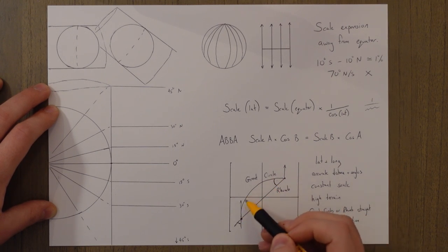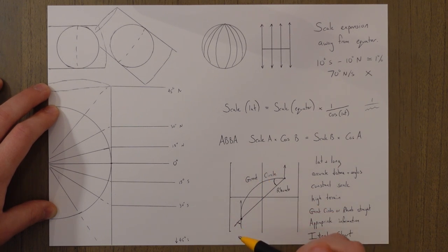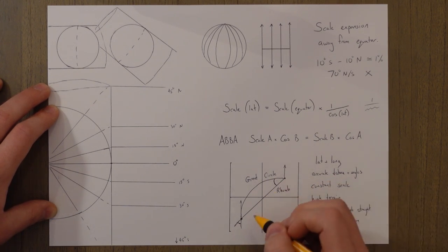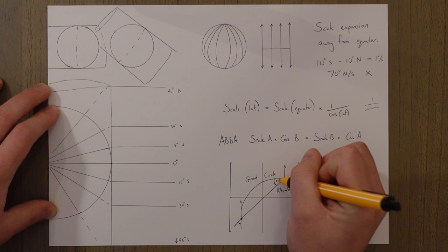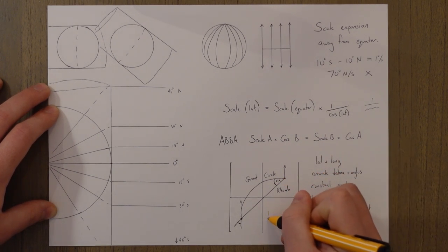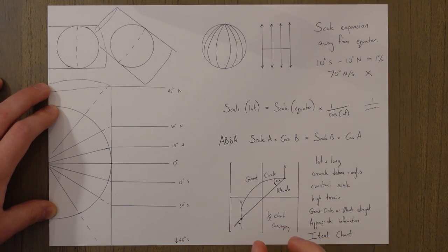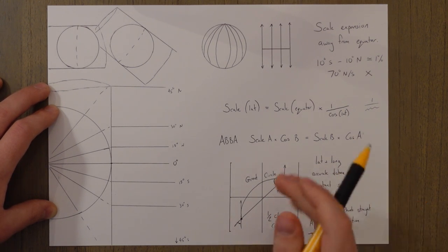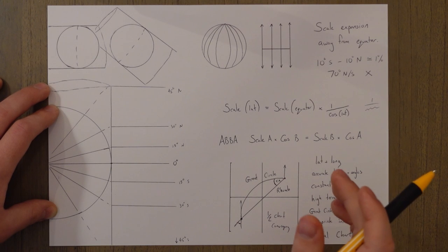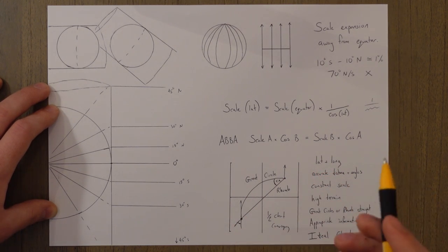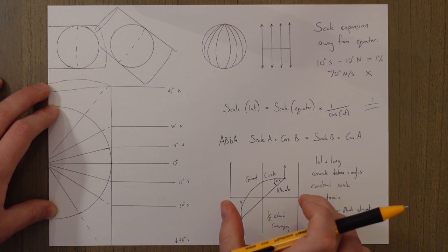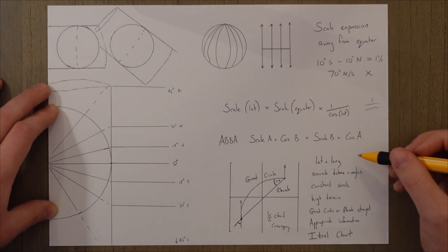The Mercator chart was invented to display rhumb lines as straight, which is what it does. A great circle will be curved, with the peak of the curve closer to the poles — and even if it crosses the equator it will be an S-shaped line. The difference between the rhumb line and the great circle is the conversion angle, which is always half of the chart convergency. Since there's no chart convergency as such, we just use the change in longitude as our convergency.